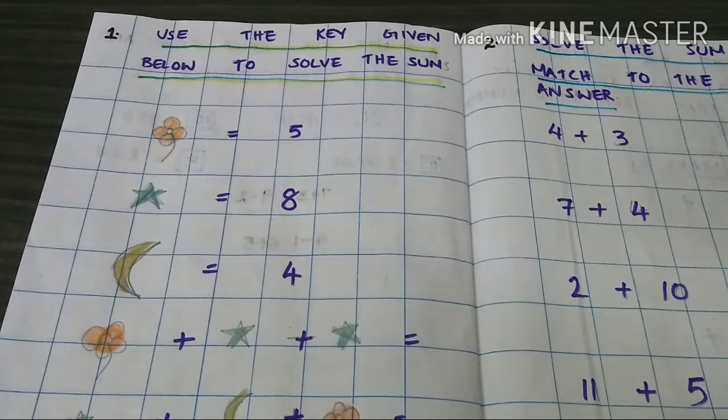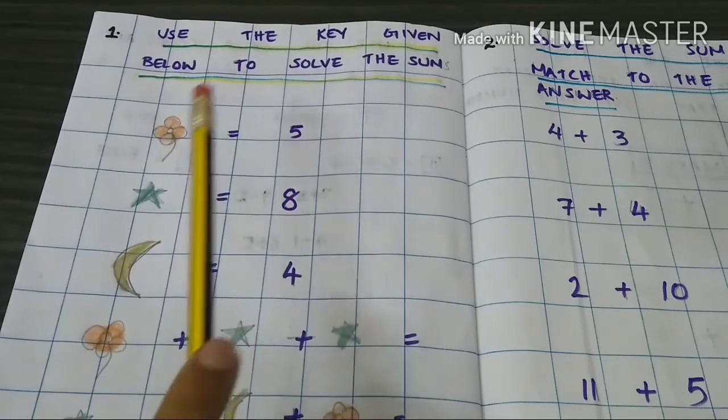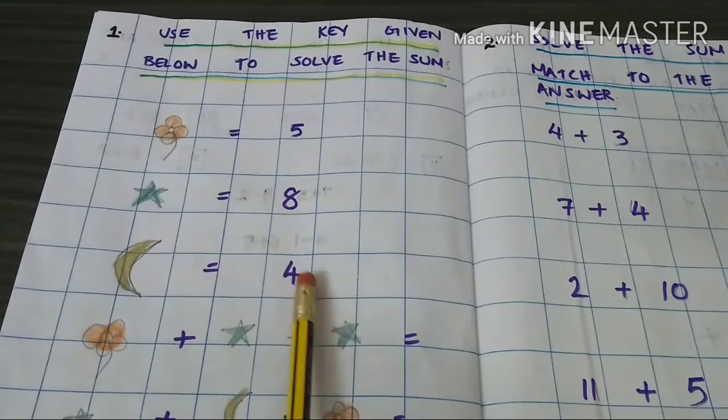Use the key given below to solve the sum. Flower equal to 5, star equal to 8, moon equal to 4.